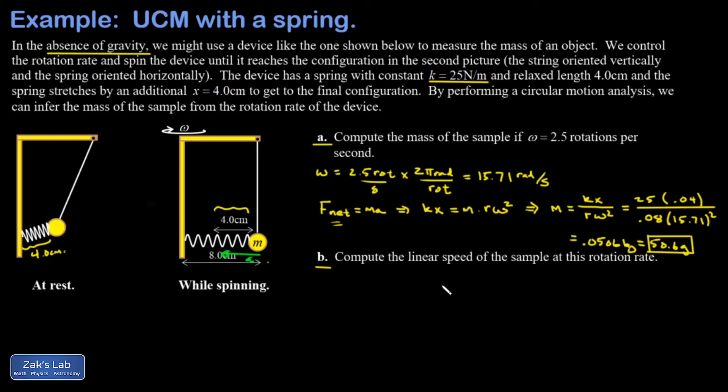Part b is a really short follow-up question about the linear speed of the sample at this rate of rotation. So we just use v equals r omega for that. The radius of curvature is 0.08 meters and the angular velocity 15.71 radians per second, and we get 1.26 meters per second.